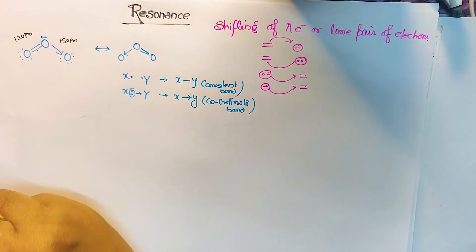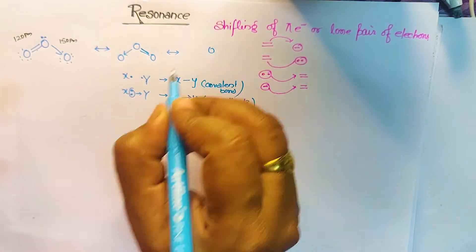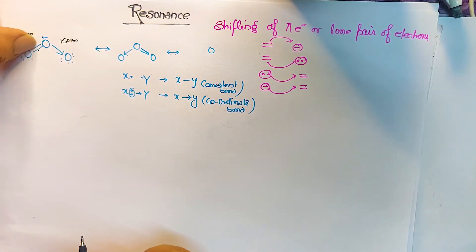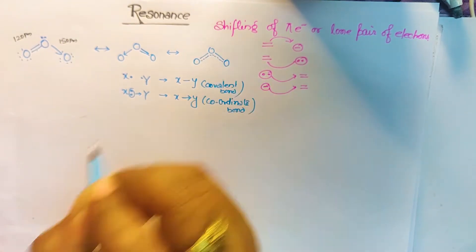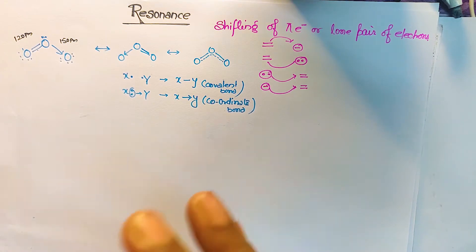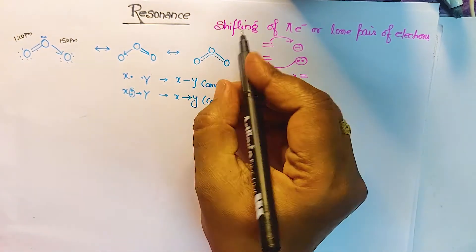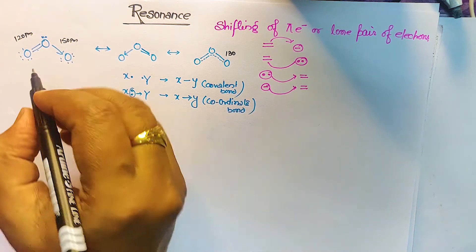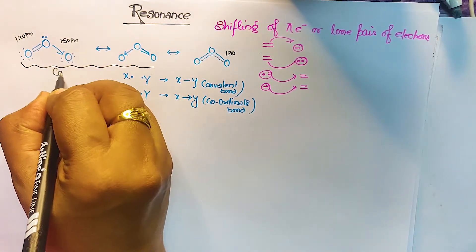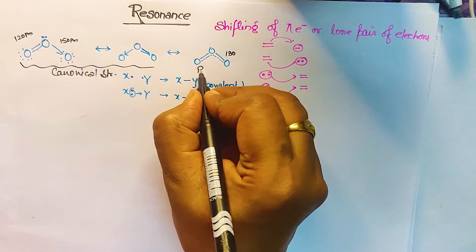Scientists proposed that different structures are drawn for the same molecular formula — this is where resonance came into existence. By shifting the pi bond in ozone, we get two structures connected by a double-headed arrow. Neither structure is exactly correct; the actual structure is the resonance hybrid, where the double bond is delocalized shown by a dotted line, and the observed bond length of ~130 pm fits between 120 and 150 pm. These two structures are called canonical structures.